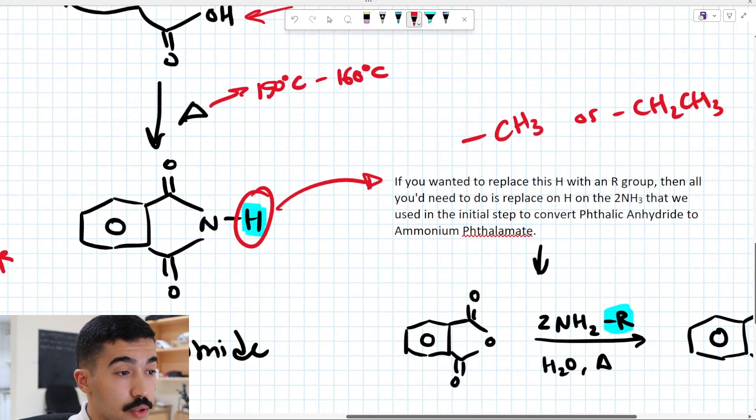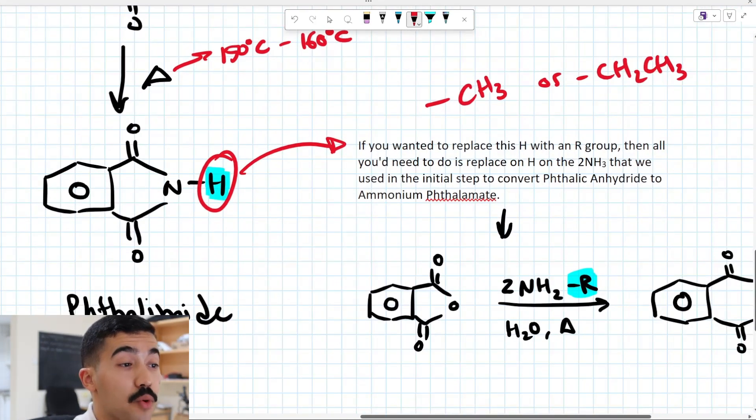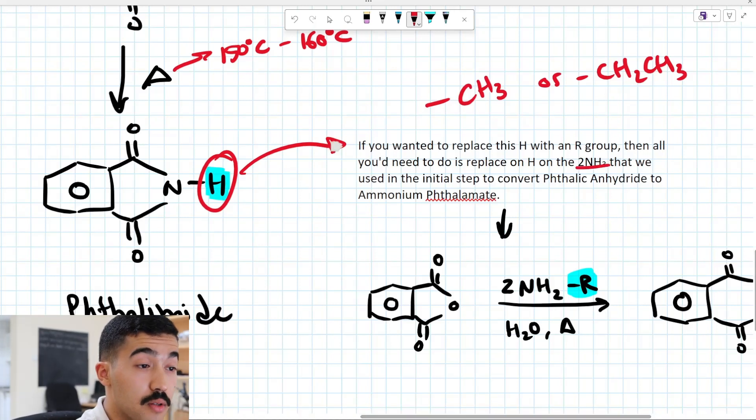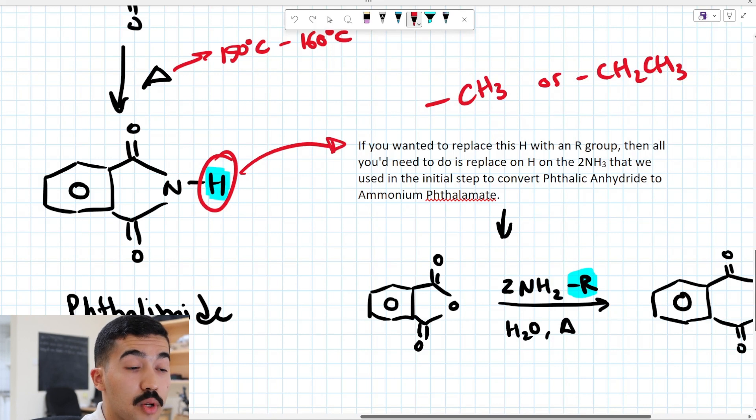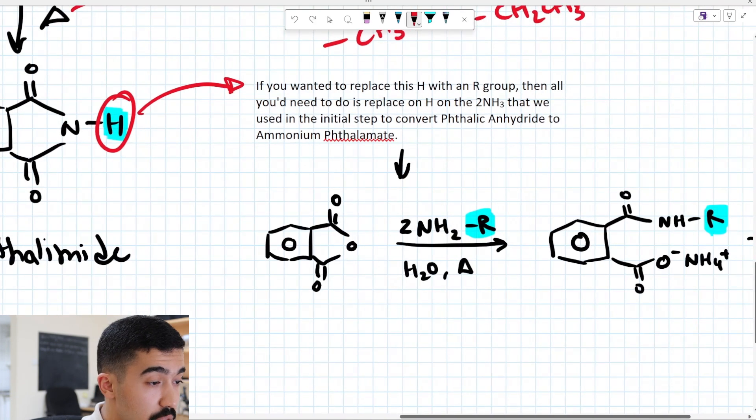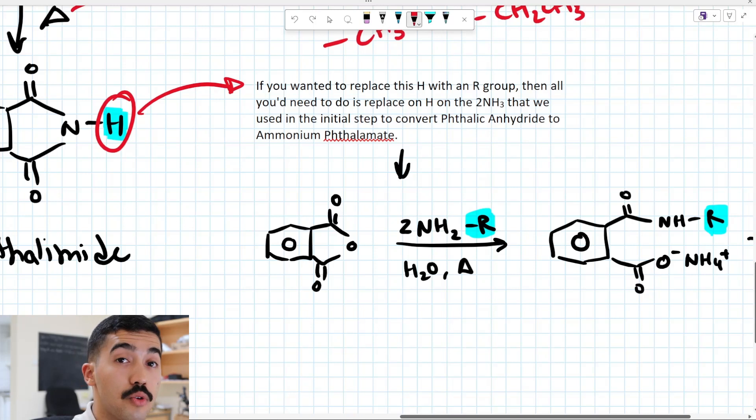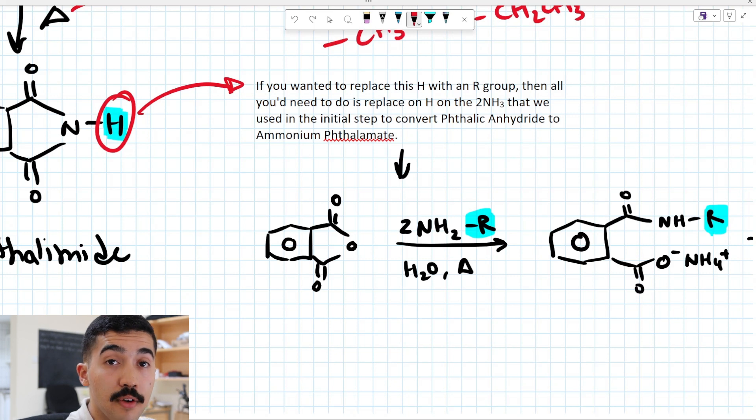Well, all you need to do, as I've written here on the screen, is replace one of the hydrogens on the 2NH3 that we used in the initial step to convert phthalic anhydride to ammonium phthalimate. Meaning, this step here, instead of using 2NH3, we would just use 2NH2R, where R represents the R group that you want to ultimately have attached on your amide functional group.